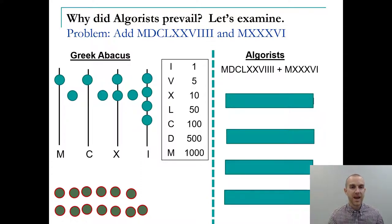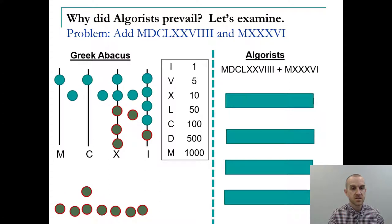Say we want to add 1679 plus 1036, written in Roman numerals thinking about the time period in which this would have occurred. The first thing we have to do is place the stones on the tablet. Here I've already laid out the first number and then the next thing you have to do is lay out the second number, so we lay out our stones here of the 1036.